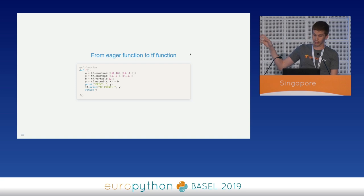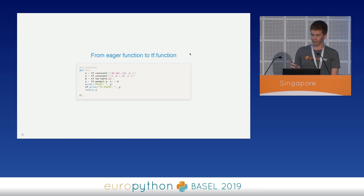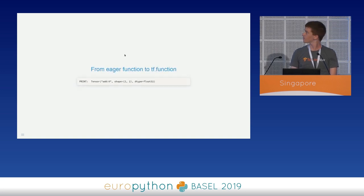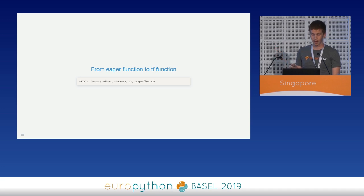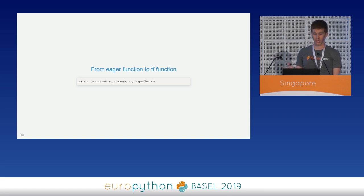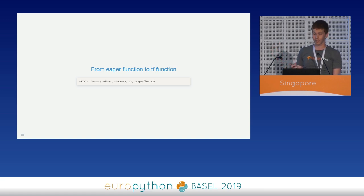I added two print statements before the return statement. One is a Python print statement executed only during tracing. The second is a tf.print statement, which is a node in the graph. This will help us understand what's going on. This is the first output we see on the console. When the function is called, the process of graph creation starts. At this stage, only the Python code is executed and traced in order to collect the required data to build a graph. As you can see, this is the only output we get. The tf.print call is not evaluated since, as any other tf method, TensorFlow already knows everything about that node — there is no need to trace its execution.